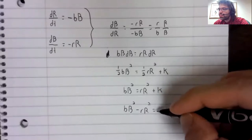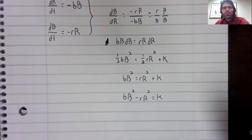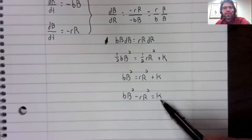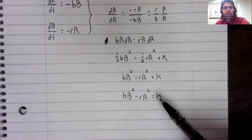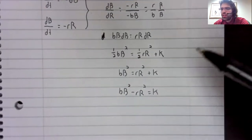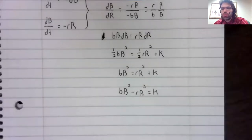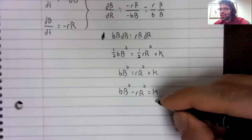Subtract over. What is K? I'm not using function notation here, but B and R are both functions of time.